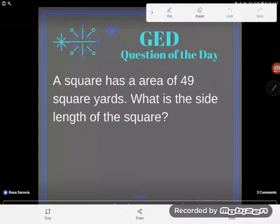It's GED question of the day and our problem today reads: a square has an area of 49 square yards. What is the side length of the square?